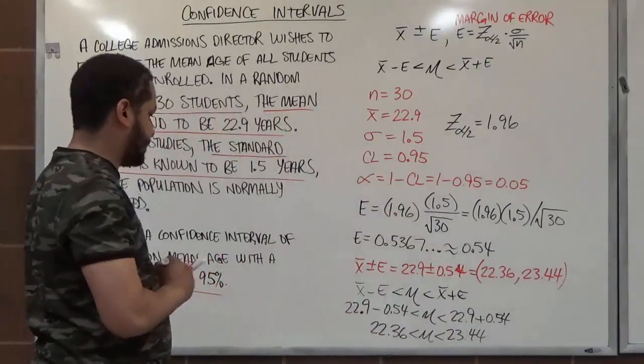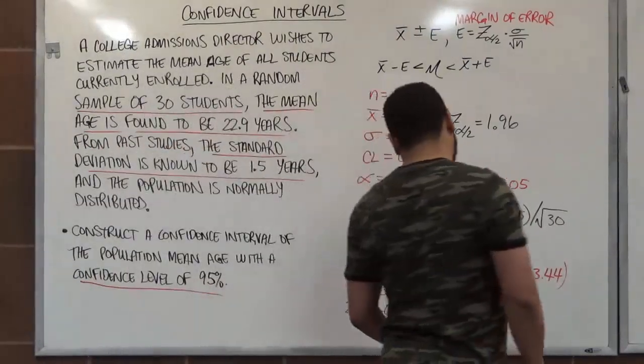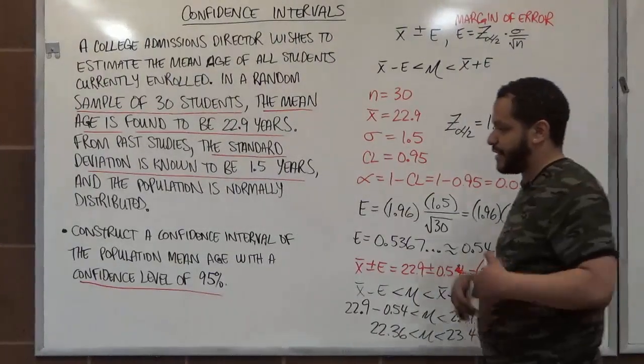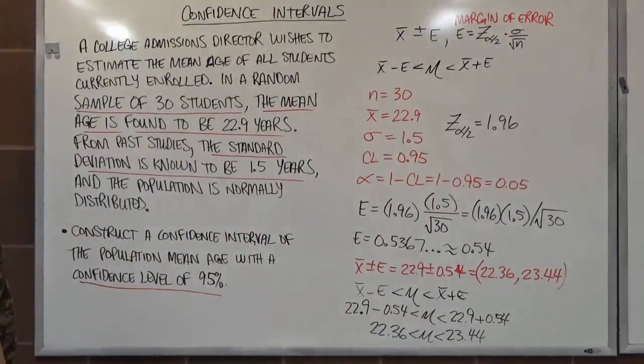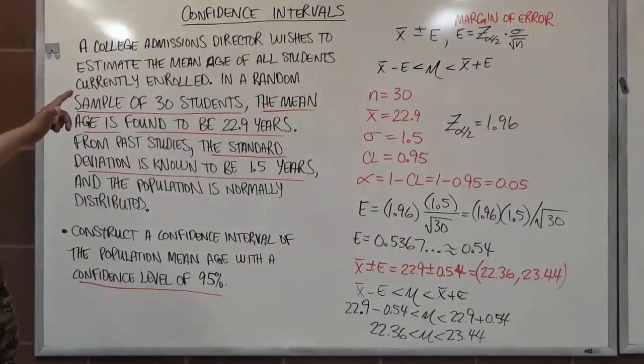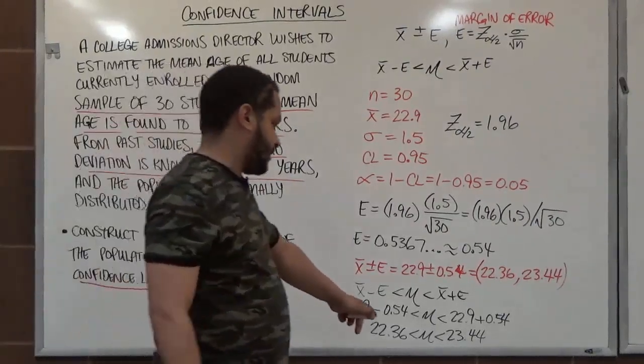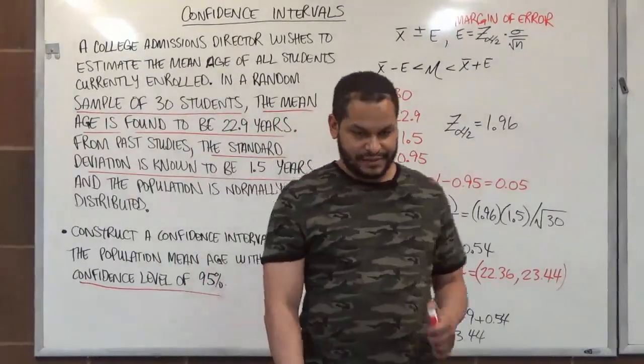So now to conclude this, we see that our confidence interval goes from 22.36 all the way to 23.44. So we are 95% confident that the true mean age of all students currently enrolled is between 22.36 years to 23.44 years of age. Thank you.